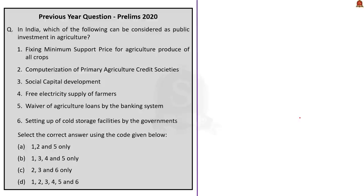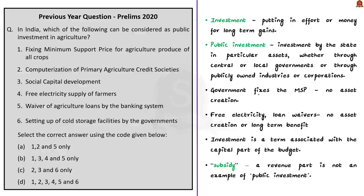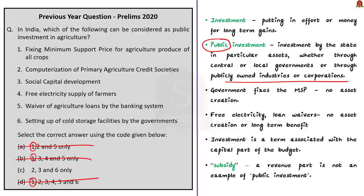Now look at this question on public investment. A common understanding of public investment will get you to the answer quickly through elimination technique. Investment is nothing but putting in effort or money for long-term gains. When you take public investment, it is roughly defined as an investment by the state in particular assets, whether through central or local governments or through publicly owned industries or corporations. Investments by definition should involve asset creation or long-term benefit. So looking at the first option where the government fixes the MSP, although it spends from its coffers, there is no asset being made. So we can eliminate options A, B, and D and arrive at C as the correct option. Options 4 and 5 also do not involve asset creation or long-term benefit, and this logic is in agreement with strict economic jargon as well.